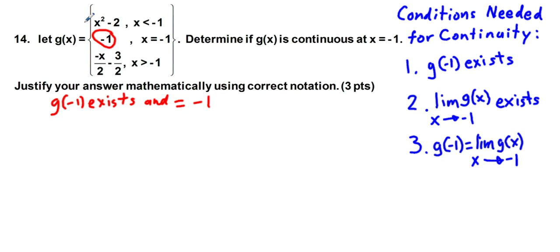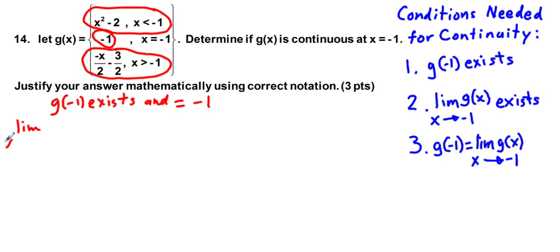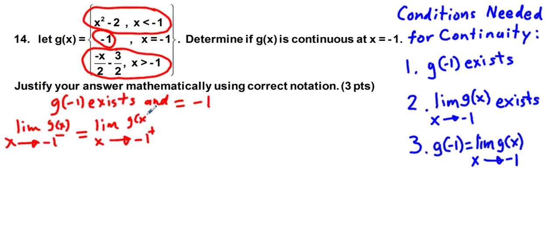To do that, the limit of the function from the left side is going to have to equal the limit of the function from the right side of negative 1. To write this in proper notation — and this is what I was looking for — the limit as x approaches negative 1 from the left side of g of x equals the limit as x approaches negative 1 from the right side of g of x. I'm going to put a little question mark above here because we don't know if these limits are equal. If they are equal, then the limit as x approaches negative 1 of g of x exists.